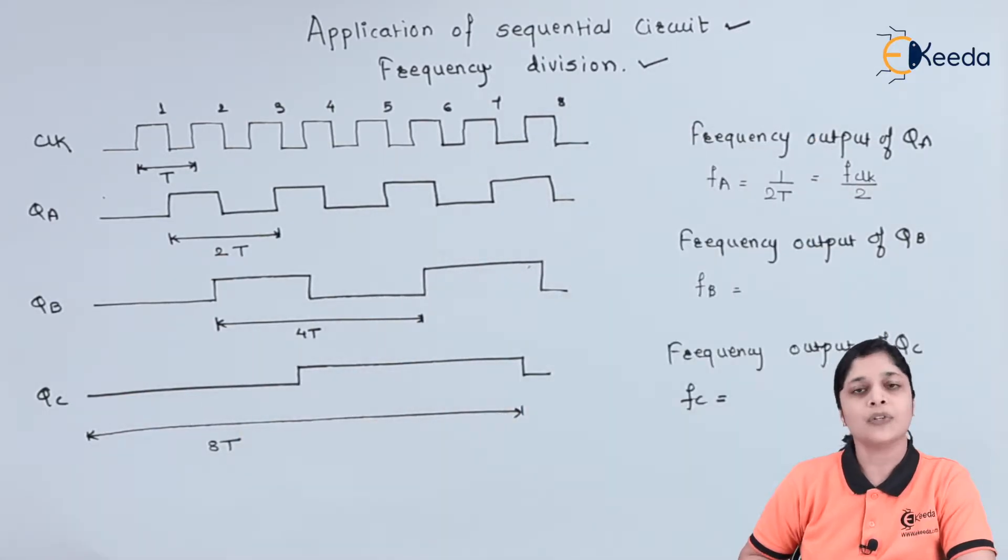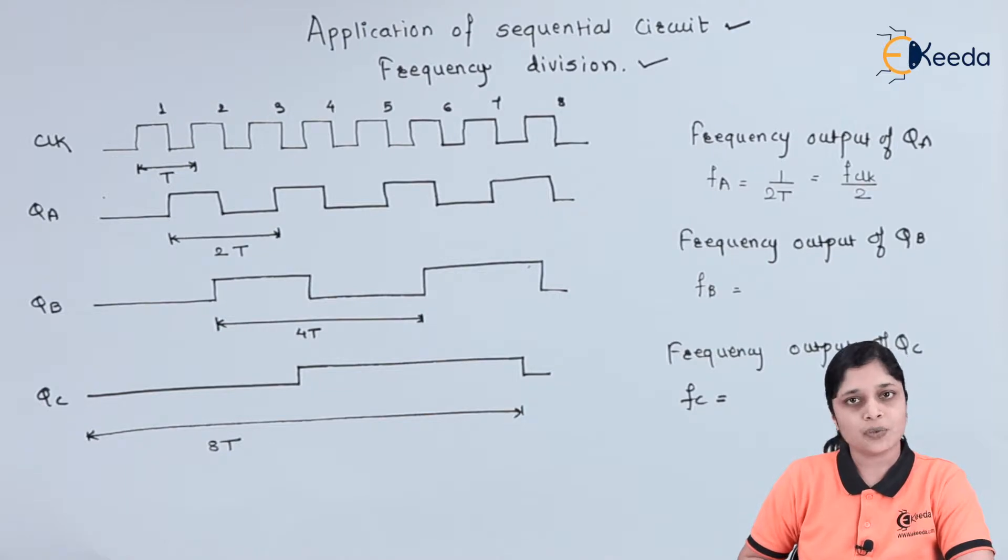How can we achieve frequency division with the use of sequential circuits? To achieve frequency division, we already know the flip-flops in toggle mode, so we have to use flip-flops in toggle mode to get the frequency division. To know the concept of frequency division, we are going to use the three bit up counter timing diagram.